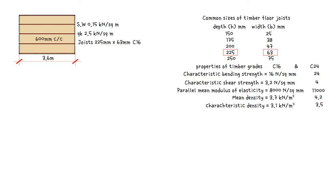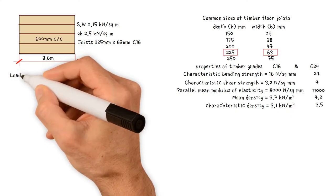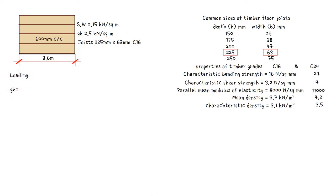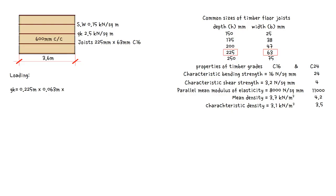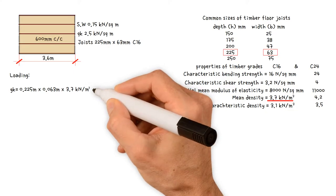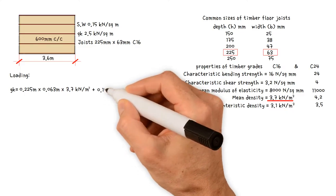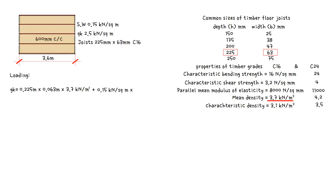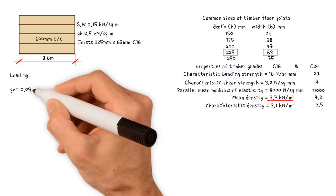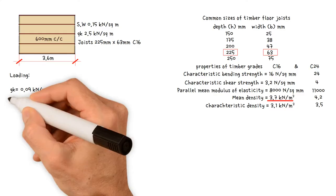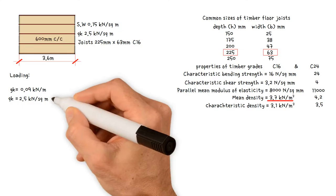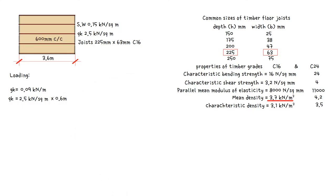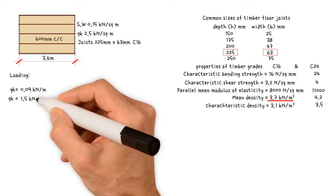To determine the size of the floor joists, we must first calculate our loading. Self-weight plus finishes equals joist depth 0.225, times width 0.063, times mean density 3.7 kilonewtons per meter cubed, plus timber boards self-weight 0.15 kilonewtons per square meter, multiplied by joist spacing of 0.6 meters. This corresponds to a value of 0.09 kilonewtons per meter. The imposed load equals the characteristic imposed floor load of 2.5 kilonewtons per square meter, multiplied by 0.6 meters joist spacing, giving a value of 1.5 kilonewtons per meter.